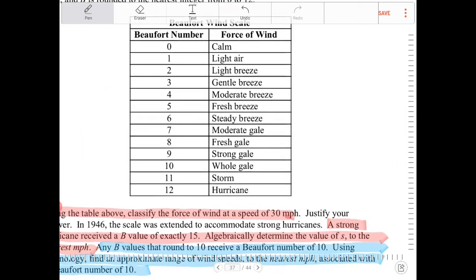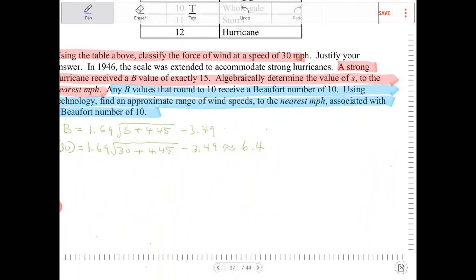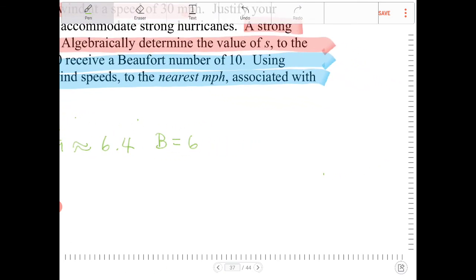So we're going to have a Beaufort number of 6.4. And a Beaufort number of 6.4 is going to be steady breeze. So b is equal to 6, because we have to round to the nearest integer. Therefore, b is equal to 6, so a speed of 30 mph is a steady breeze.